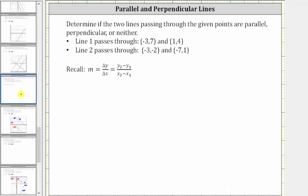To determine the slope, we will find the change of y divided by the change of x. Because we have ordered pairs, we will use the formula: the quantity y sub two minus y sub one, divided by the quantity x sub two minus x sub one.